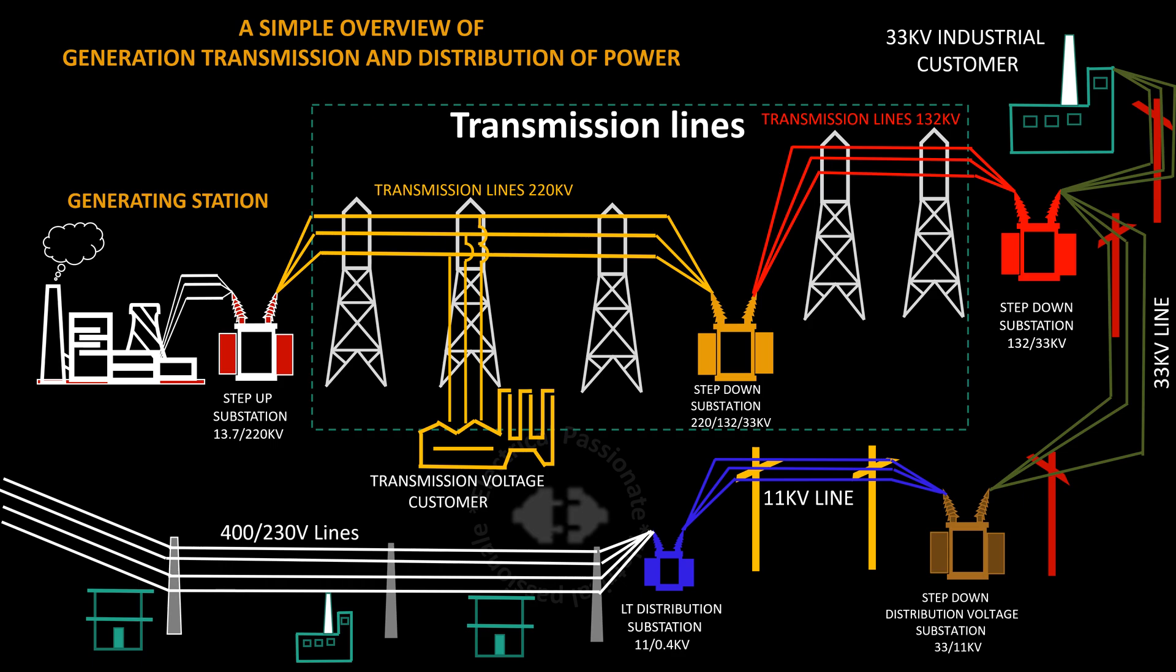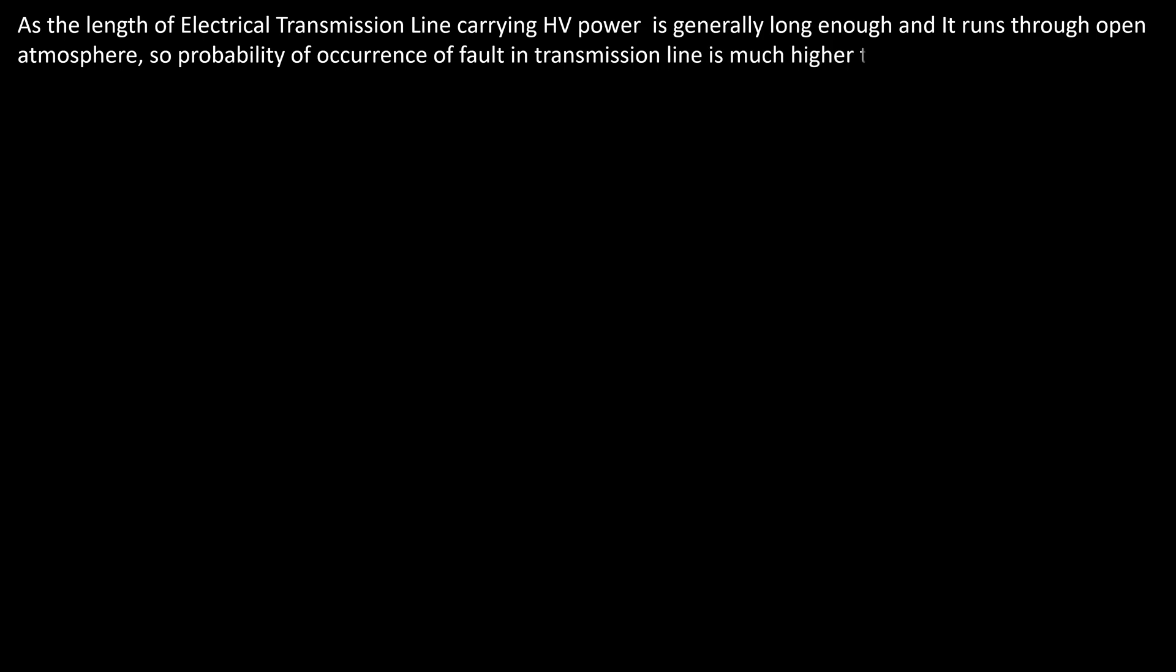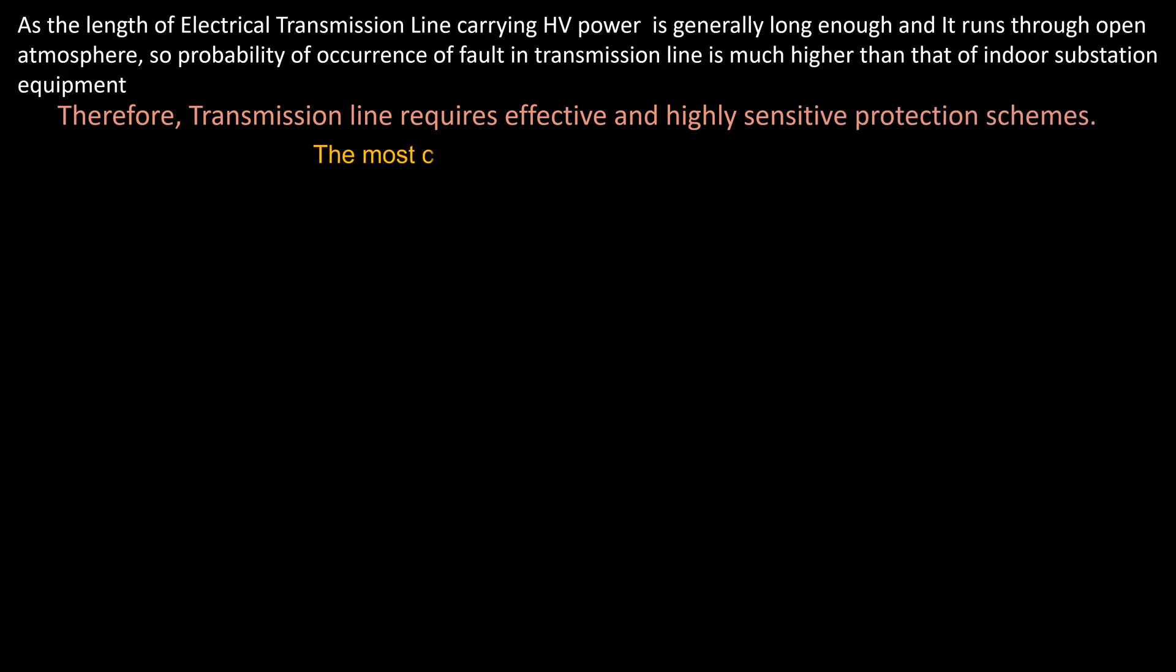As the length of electrical transmission lines carrying HV power is generally long enough and it runs through open atmosphere, probability of occurrence of fault in the transmission line is much higher than that of indoor substation equipment. Therefore, transmission line requires effective and highly sensitive protection scheme.